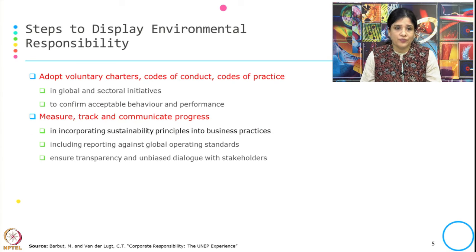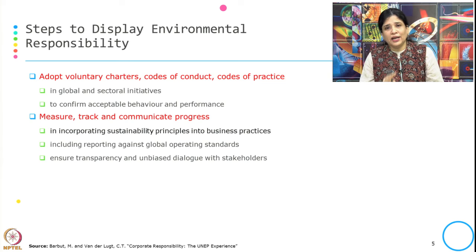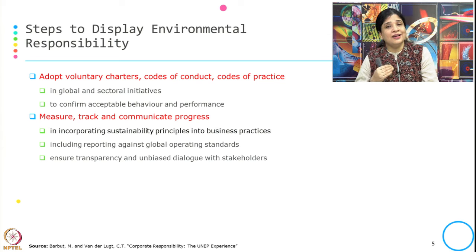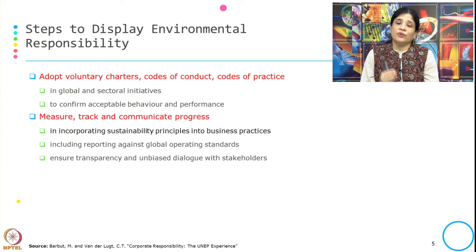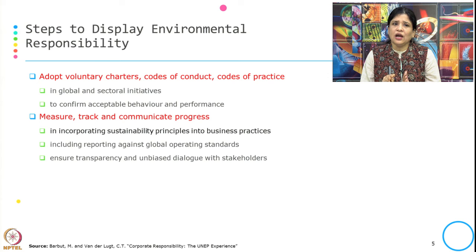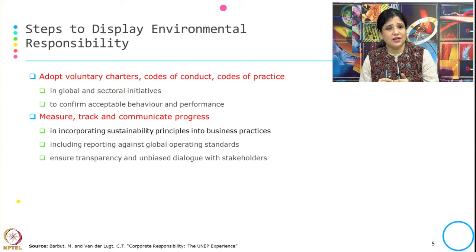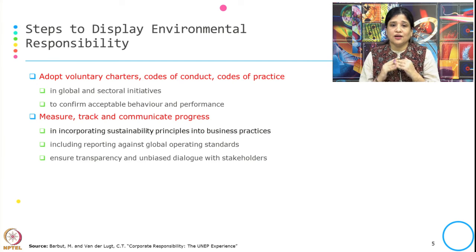They also need to adopt voluntary charters, codes of conduct, and codes of practice at both the sectoral and global level. This confirms that they have acceptable behavior and performance in sustainability. And whatever they are doing — redefining policy or strategy, developing indicators, working across the supply chain — how they are actually doing the environmental responsibility is shown through measuring, tracking, and communicating progress. This includes reporting performance against global operating standards and ensuring transparency and unbiased dialogue with stakeholders.